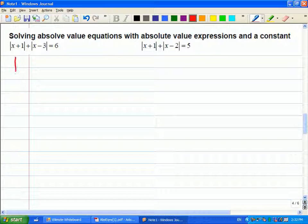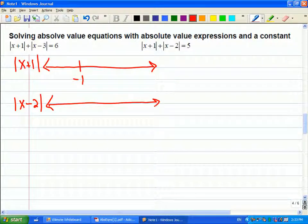For the first one, I would care about this at negative 1. That's where it would be kicking in the absolute value. And at x minus 2, it would be at 2, where the absolute value starts to kick in.